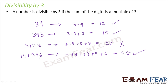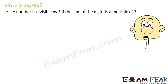The question is: how did we come up with such a unique rule for 3? How did we know that it is the sum of the digits which decides if a number is divisible by 3 or not? Let us see how it works by taking the example of the number 938.